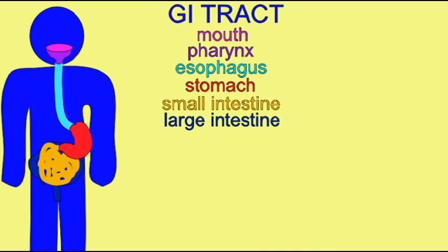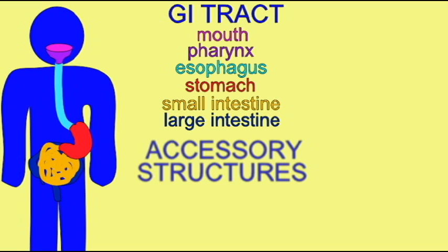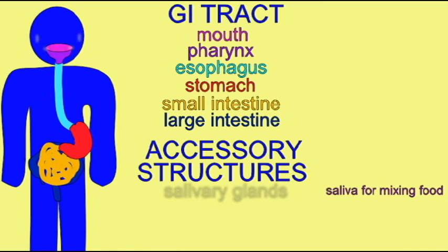There are a number of accessory structures which also help in the process of digestion. Food never passes through them, but their functioning aids the overall digestive process. These would include the salivary glands in the mouth, which secrete the saliva that helps to mix the food.